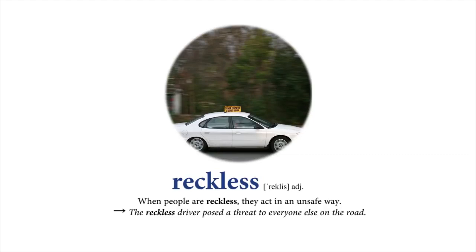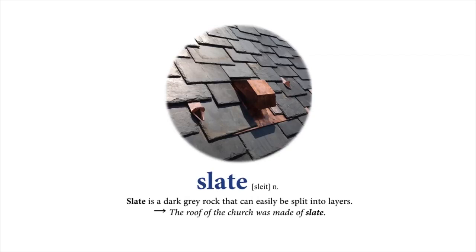Slate: Slate is a dark gray rock that can easily be split into layers. The roof of the church was made of slate.